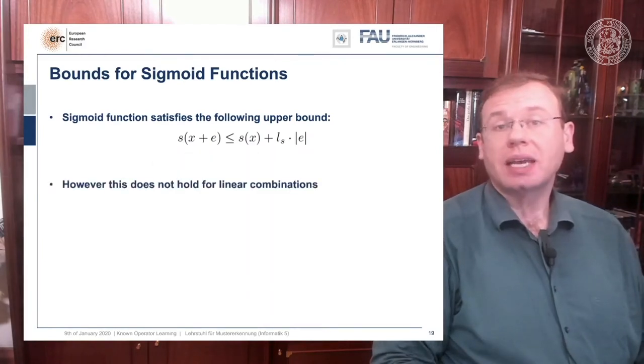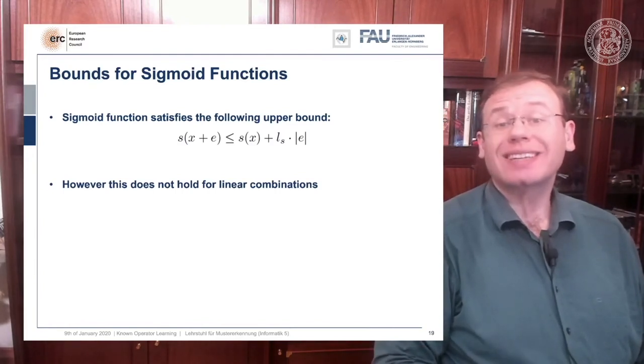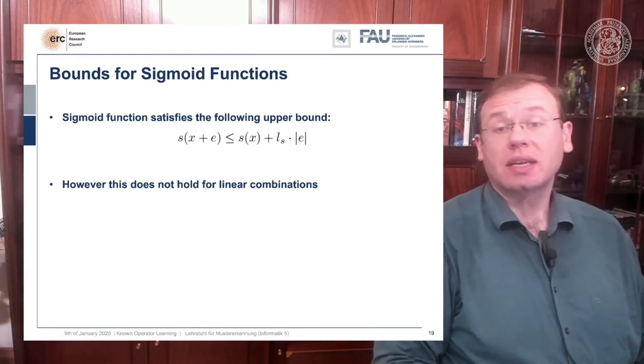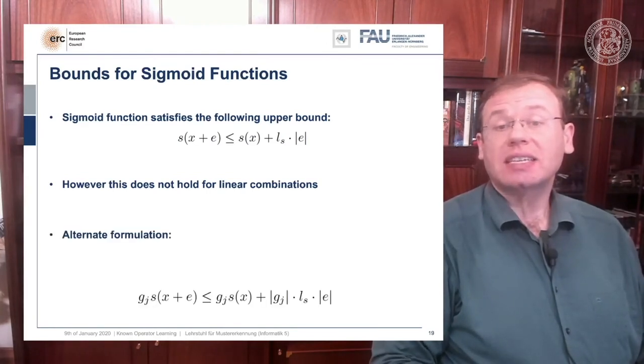We can now go ahead and use it for our purposes, but we just run into the next problem. Our Lipschitz bound here doesn't hold for linear combinations. So you see that we are actually interested in multiplying this with some weight gj, and as soon as I take a negative gj then this would essentially mean that our inequality flips.